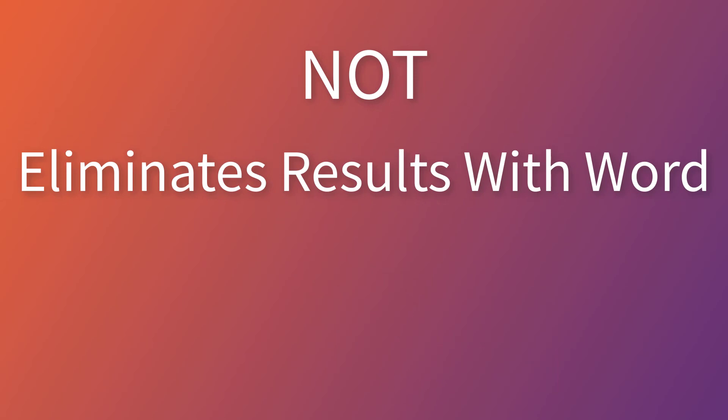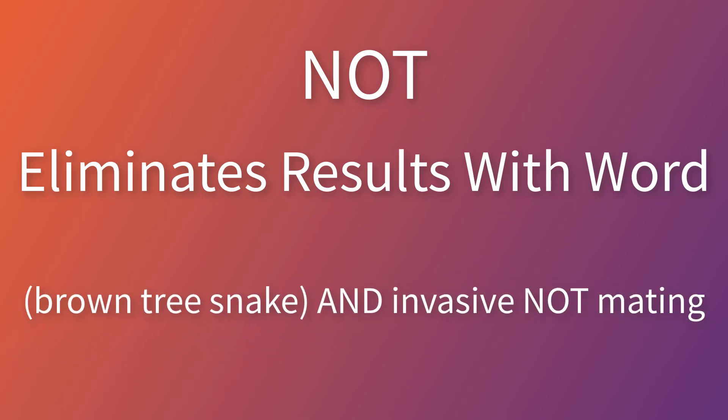NOT will eliminate results that have a certain keyword. NOT statements are usually placed at the end of the search. NOT is not as useful as the other operators, but it can cut through the noise and remove unwanted results. For example, if you don't want articles about brown tree snake mating habits, you could search: brown tree snake AND invasive NOT mating.